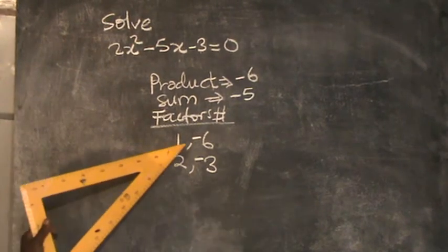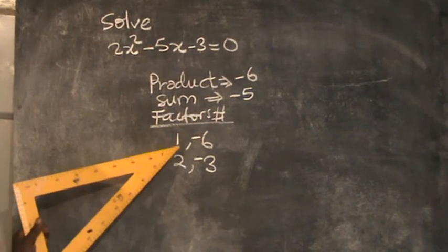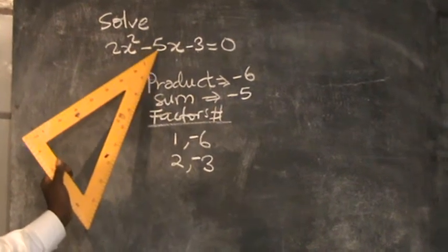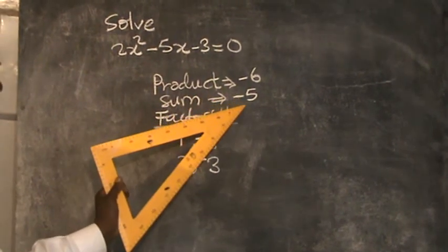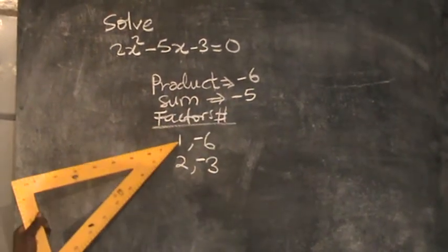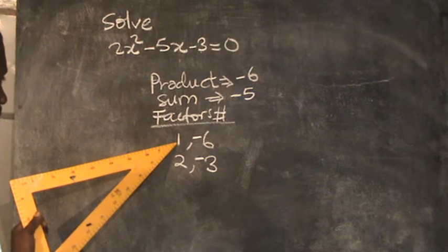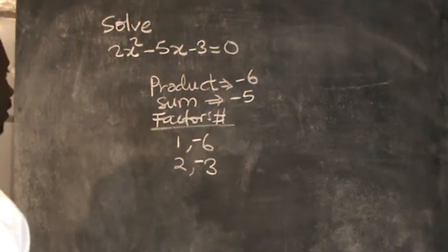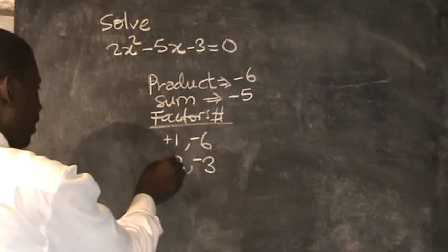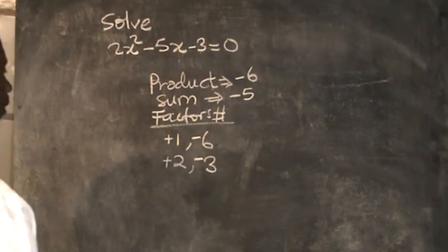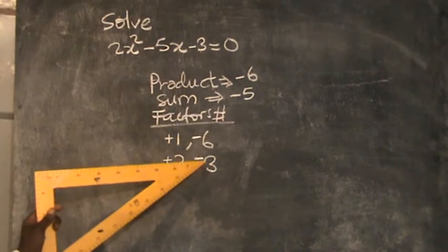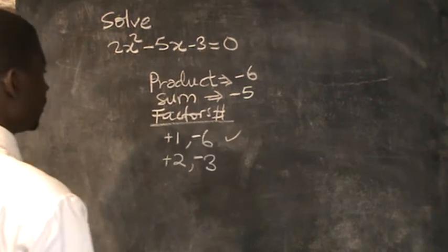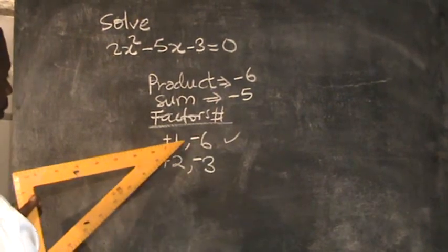Now check the factors you have raised: which pair adds up to negative 5? If you add positive 1 and negative 6, the answer is negative 5. But if you add positive 2 and negative 3, the answer is negative 1. So the correct factors are positive 1 and negative 6.